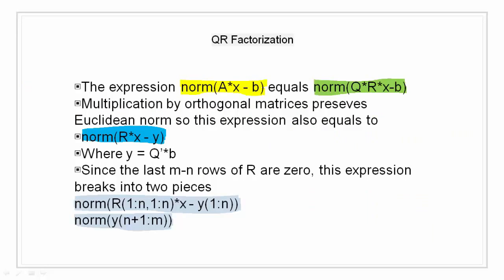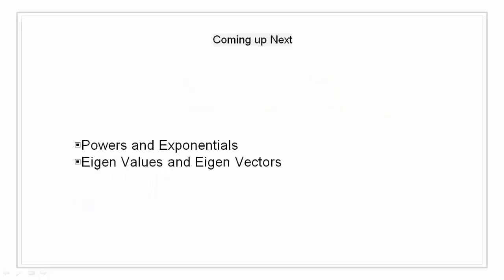The QR factorization transforms an over determined linear system into an equivalent triangular system. The expression norm of AX minus B equals norm of QRX minus B. Multiplication by orthogonal matrices preserves the Euclidean norm so this expression is also equal to norm of RX minus Y where Y is Q transpose into B. Since the last M minus N rows of R are zero, this expression breaks into two pieces: norm of R of 1 to n, 1 to n X minus Y of 1 to n, and norm of Y of n+1 to m. This concludes our video on factorization. Coming up next we have powers and exponentials and eigenvalues and eigenvectors of matrices.